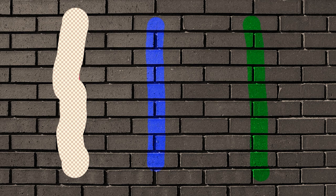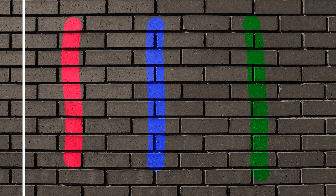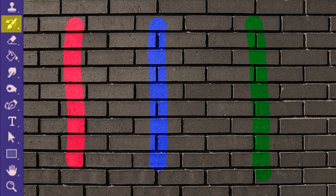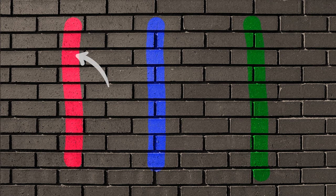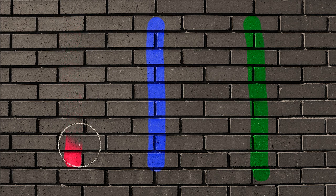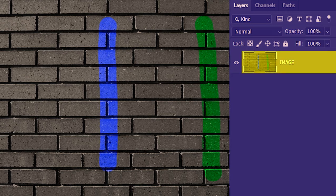This brings us to the history brush tool. I'll click here and select the history brush tool, then paint on top of the red. And voila — the red is removed. The wall is intact even though they are on the same single image layer.